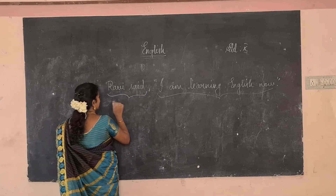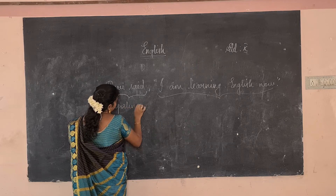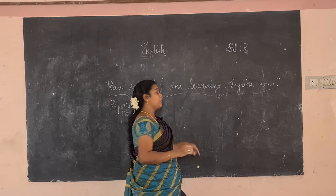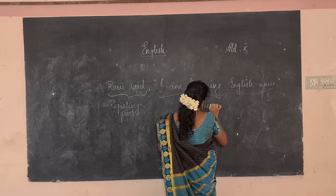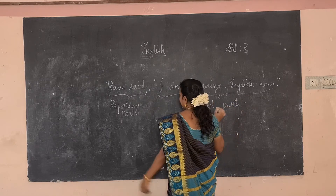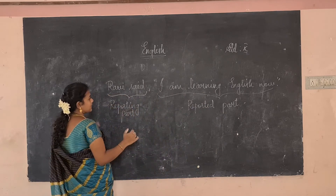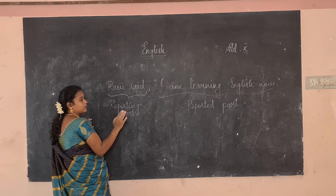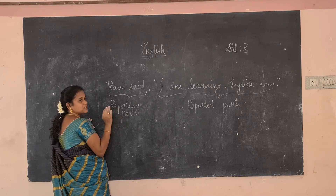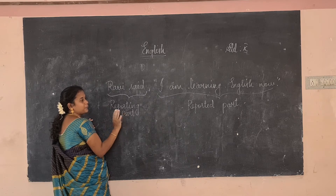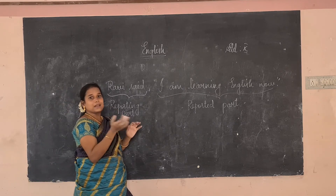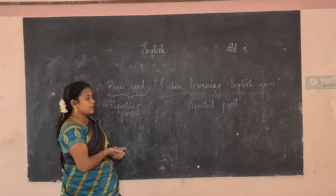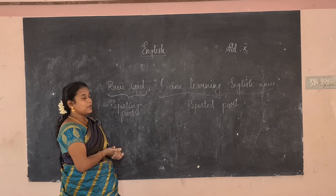So 'Ravi said' is the reporting part, and 'I am learning English now' is the reported part. The sentence 'I am learning English now' is a statement. We have to find out what type of sentence it is. Then, if the speaker and listener are both present, the word changes: 'said to' becomes 'told', 'say to' becomes 'tell', and 'says to' becomes 'tells'. Here, since only the speaker Ravi is there with no listener, Ravi told Rahim — we join both sentences using the conjunction 'that'.